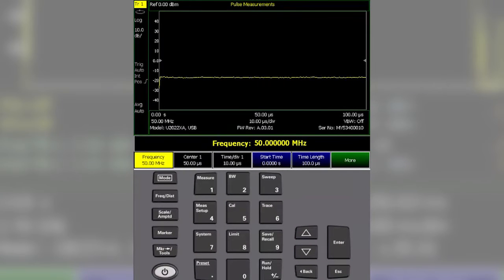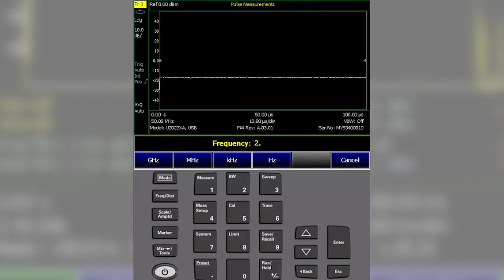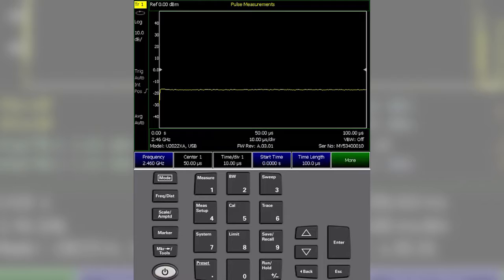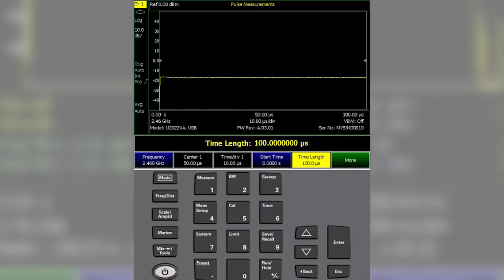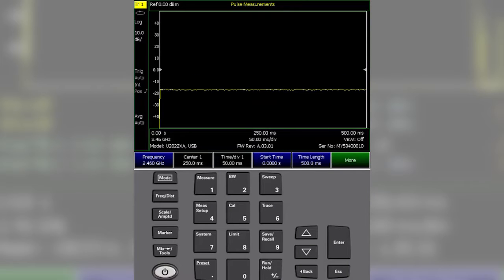So the first thing that we're going to do is we're going to go to pulse measurement and we're going to set up our FieldFox to be measuring the same frequency as the pulse that we're trying to measure. And next we're going to make sure that our measurement duration is long enough so that we see multiple pulse widths on the screen.